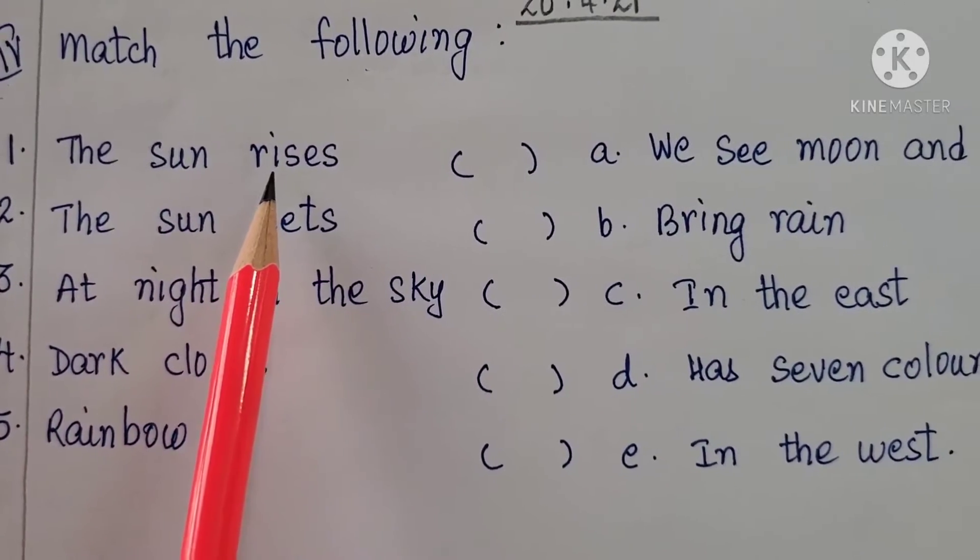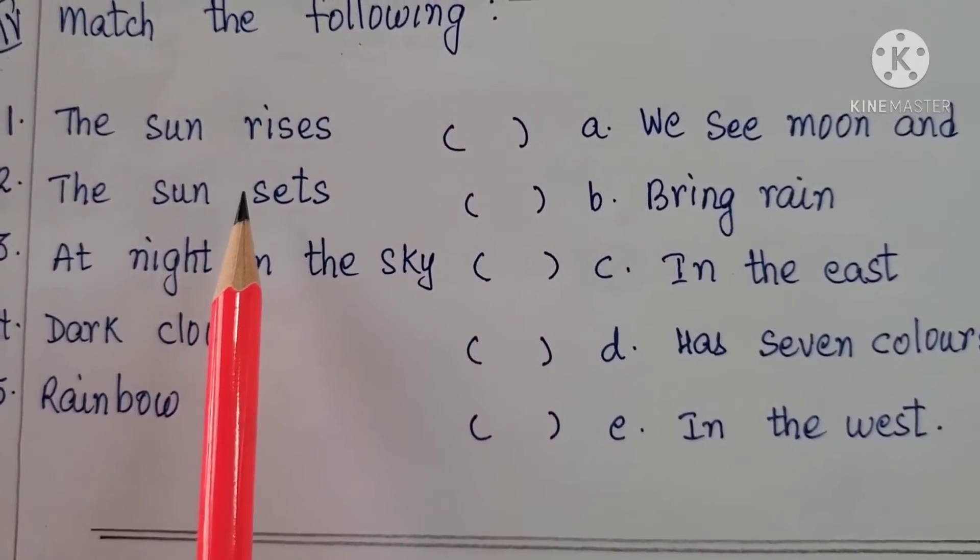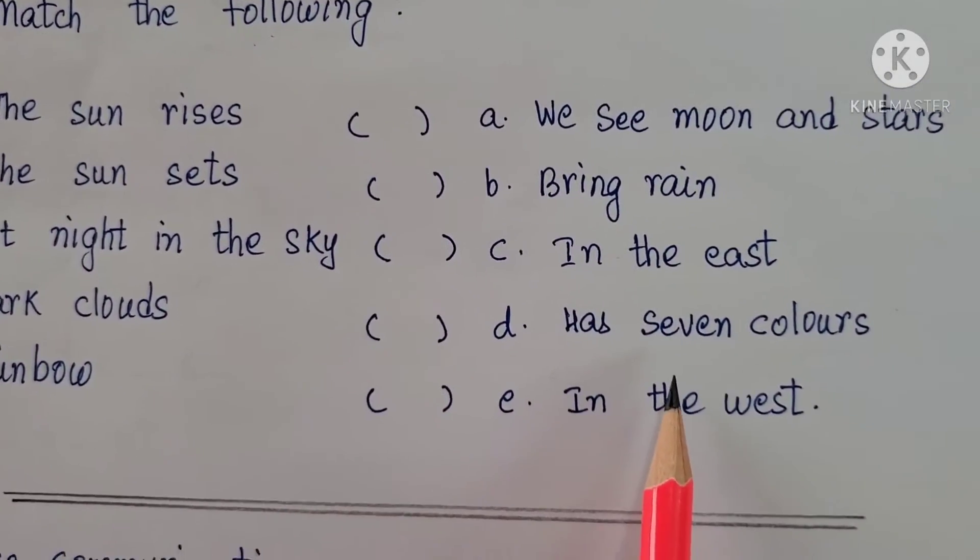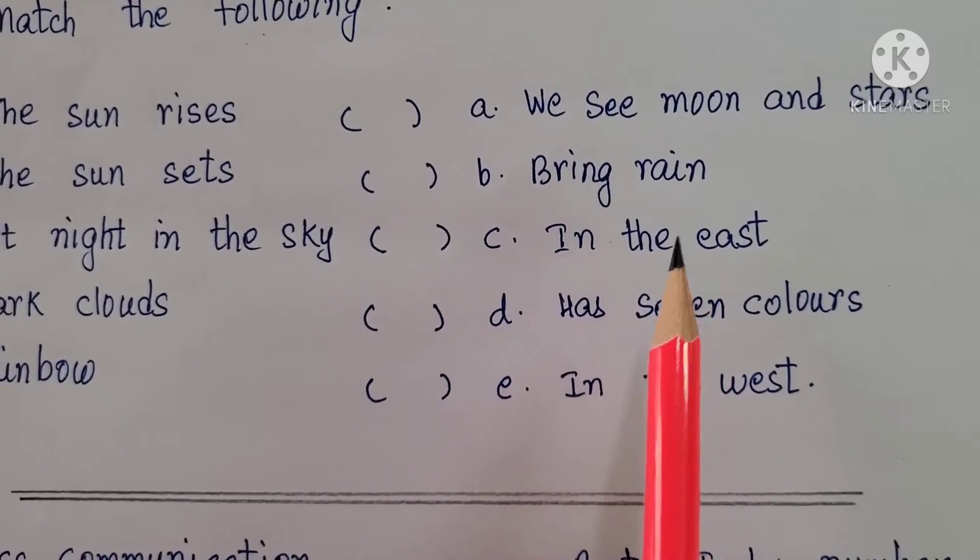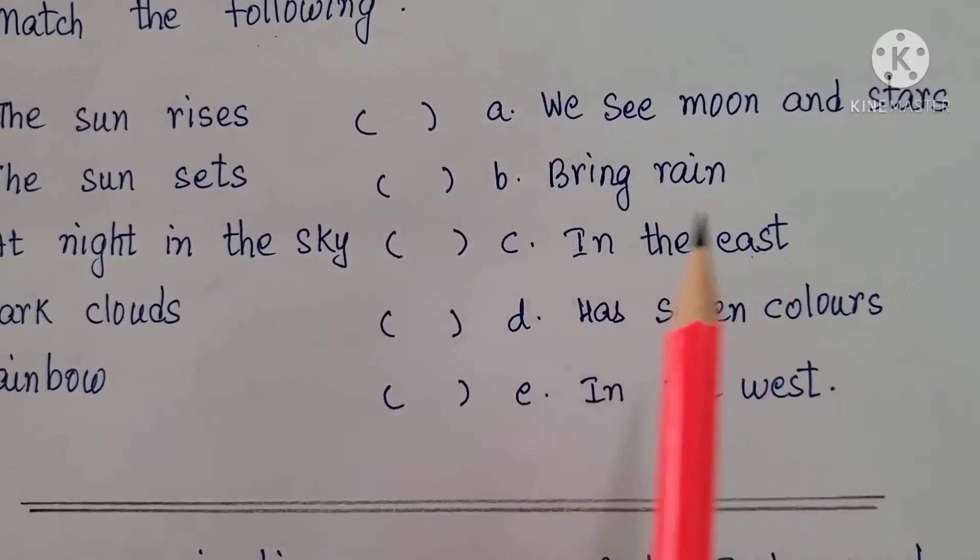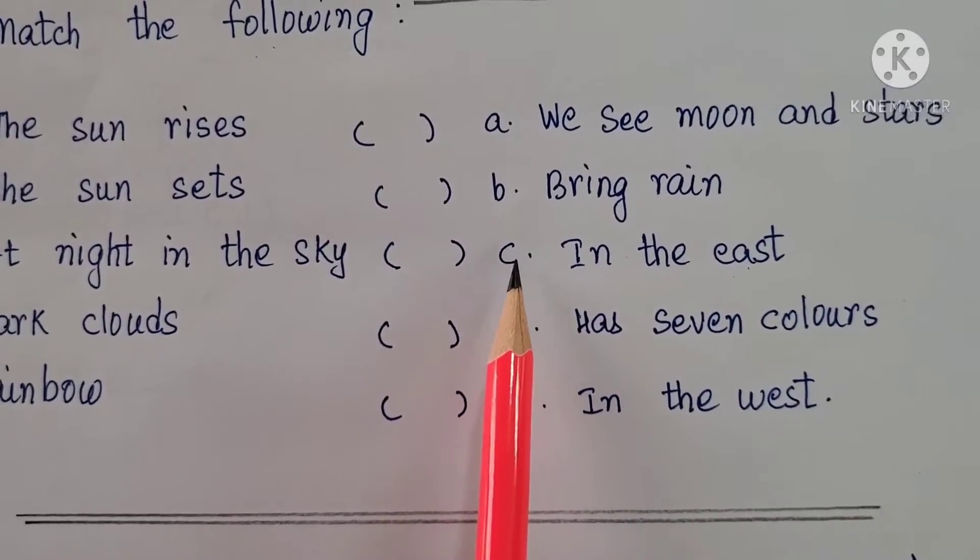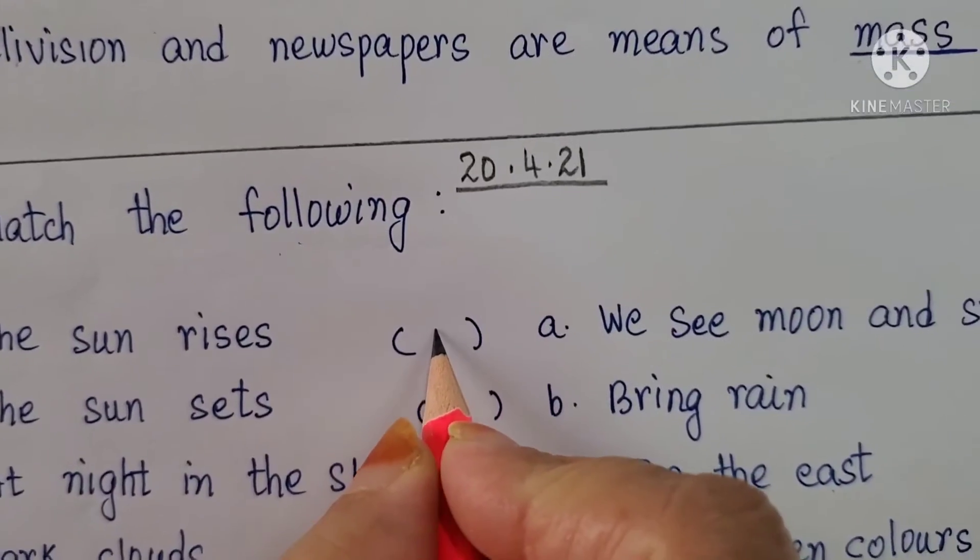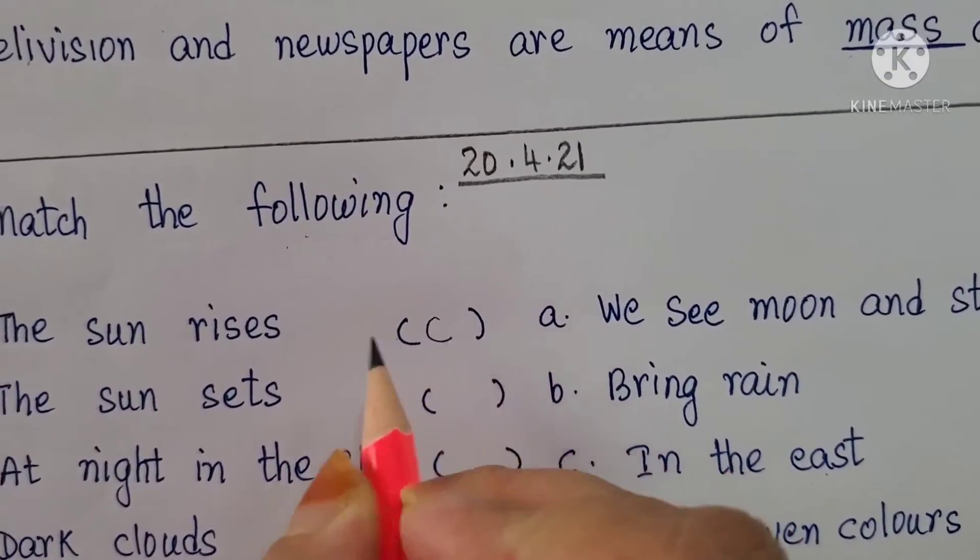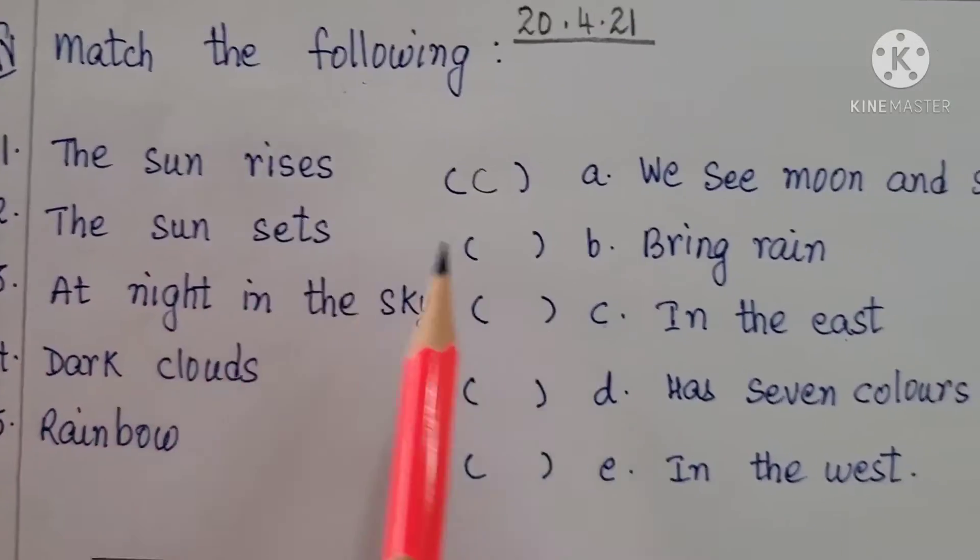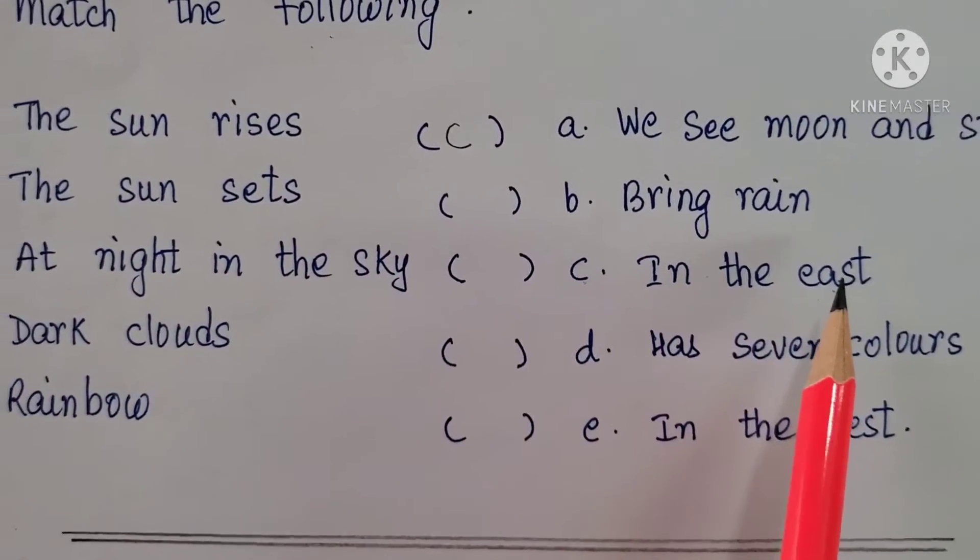The sun rises. Where does the sun rise? You have to see in column B. The sun rises in the east. In the east. So which alphabet is here? C. So you all need to write here C. This is matching with C. The sun rises in the east.